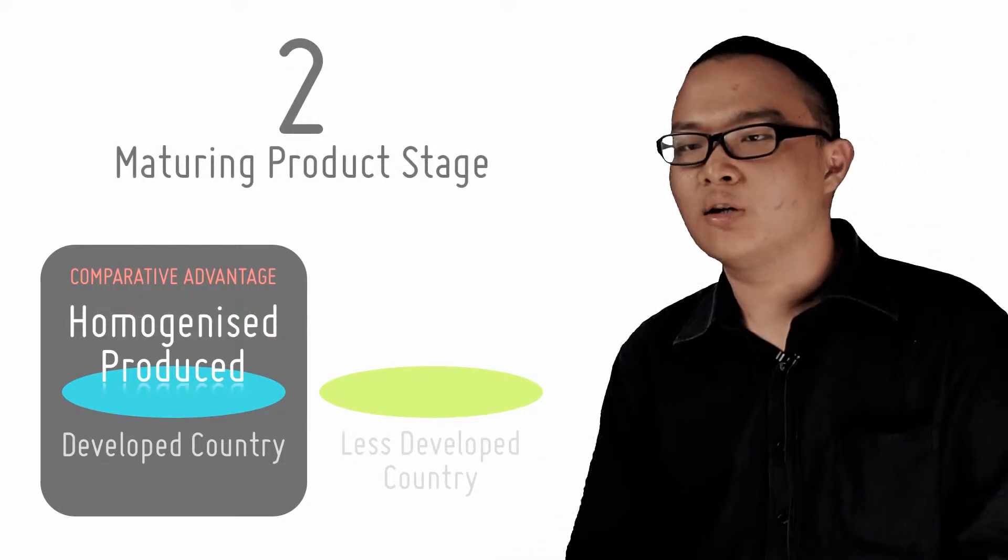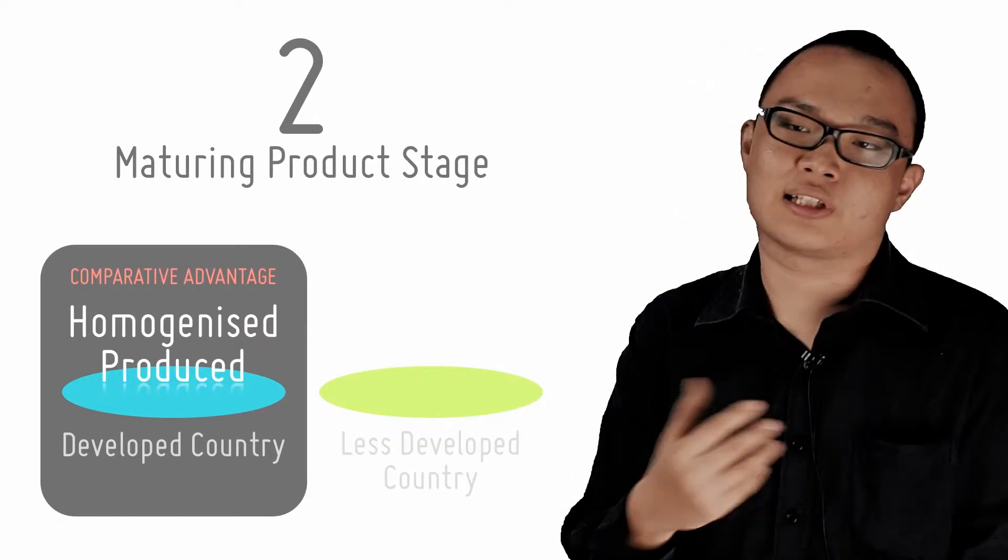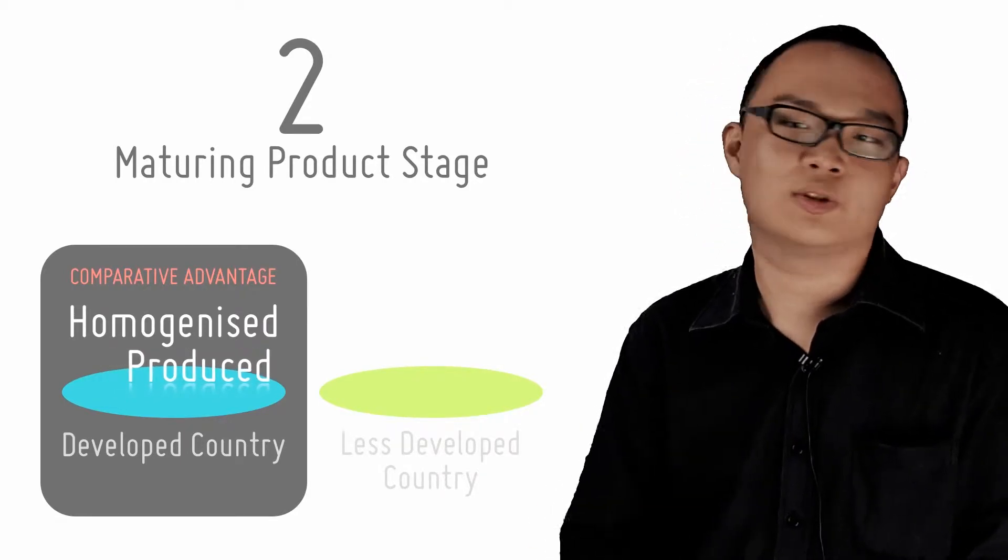Now in stage 2, the maturing product stage, more and more firms replicate the product. Mass production is utilized and we observe increased homogeneity.